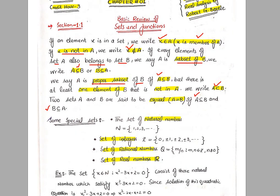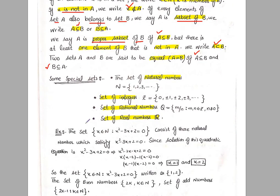Next are some special sets. First, the set of natural numbers, which we denote by N, contains elements 1, 2, 3, and so on. Next is the set of integers. This set contains elements 0, ±1, ±2, ±3, and so on. We denote this set by Z.